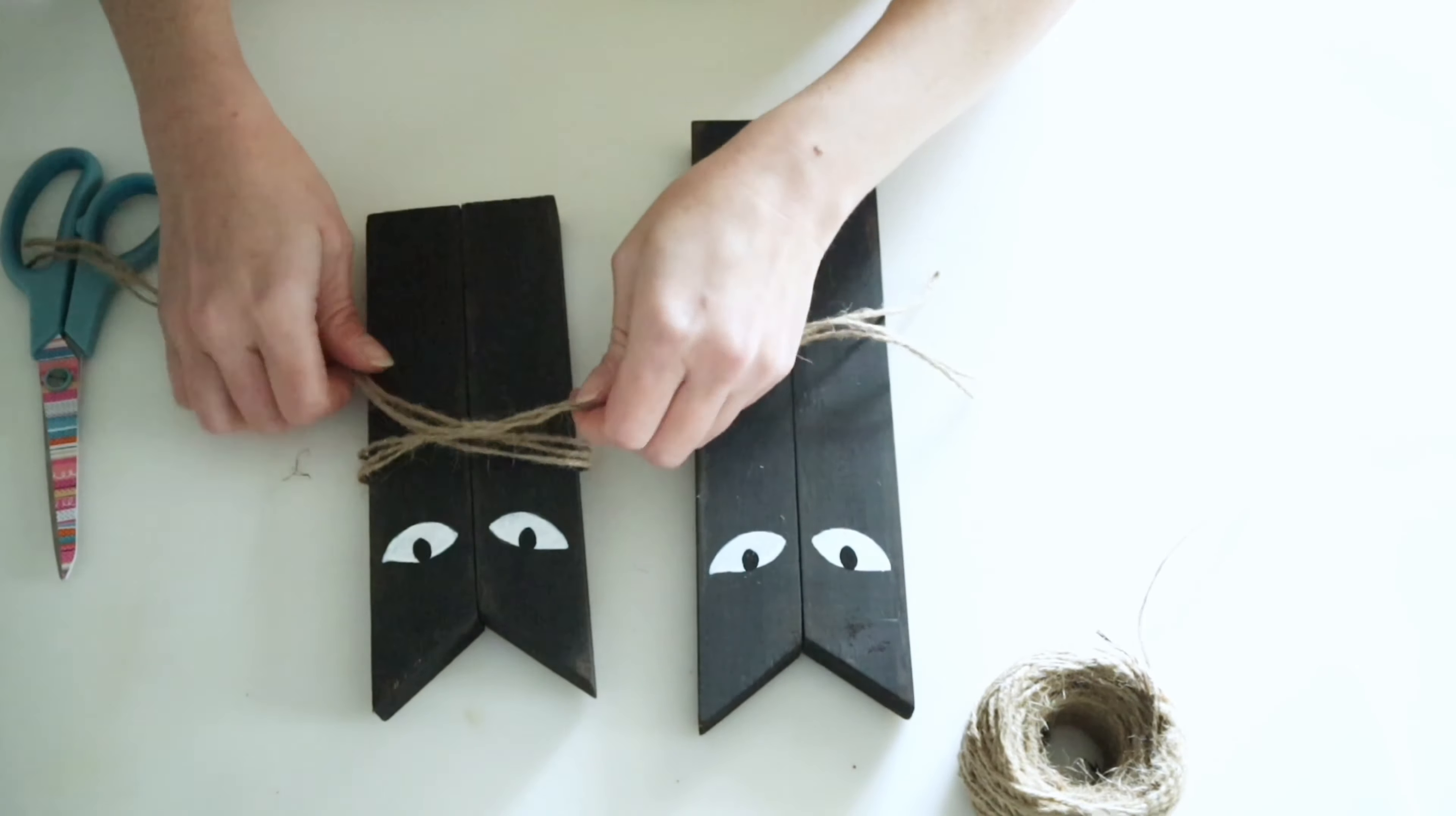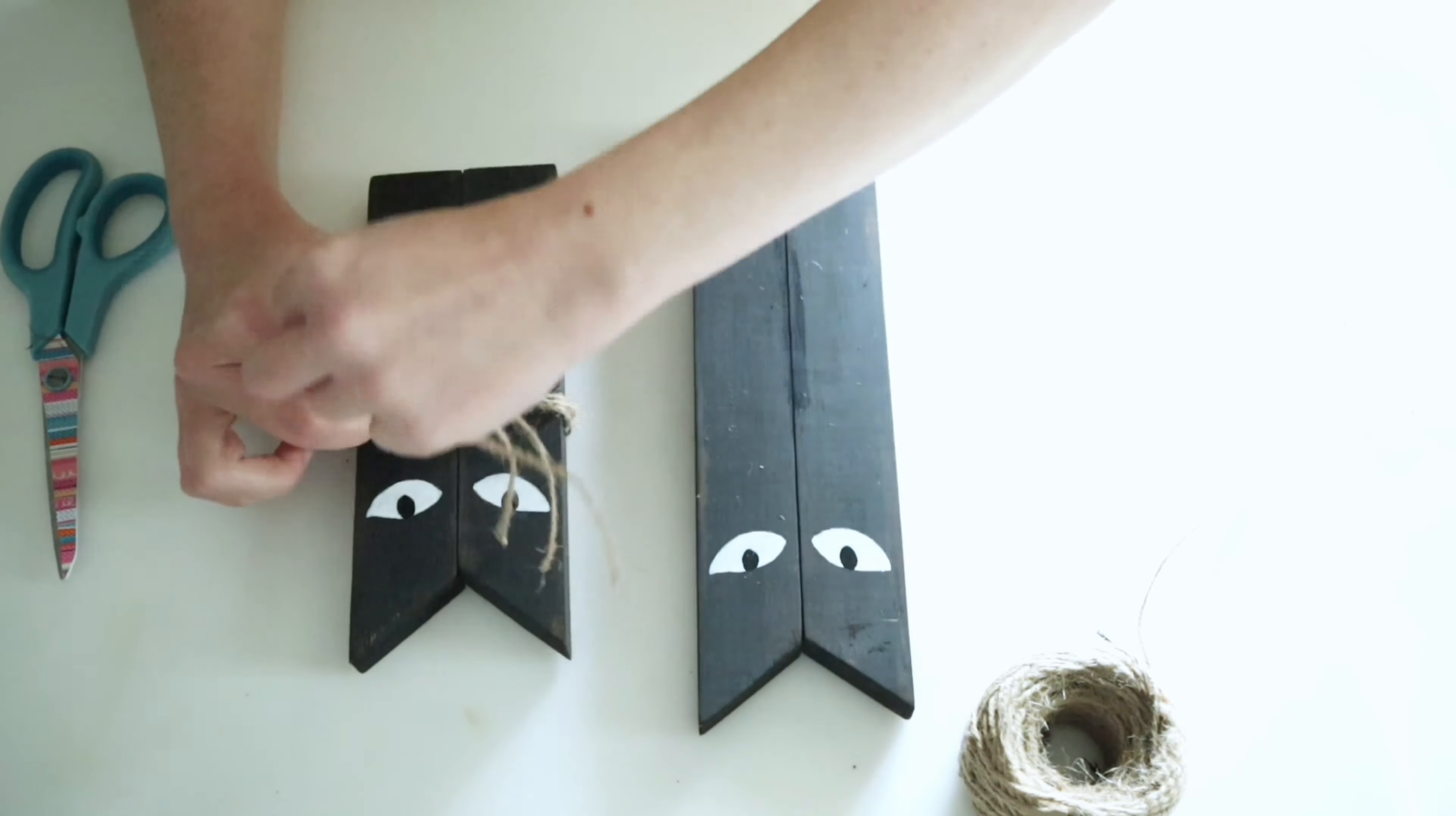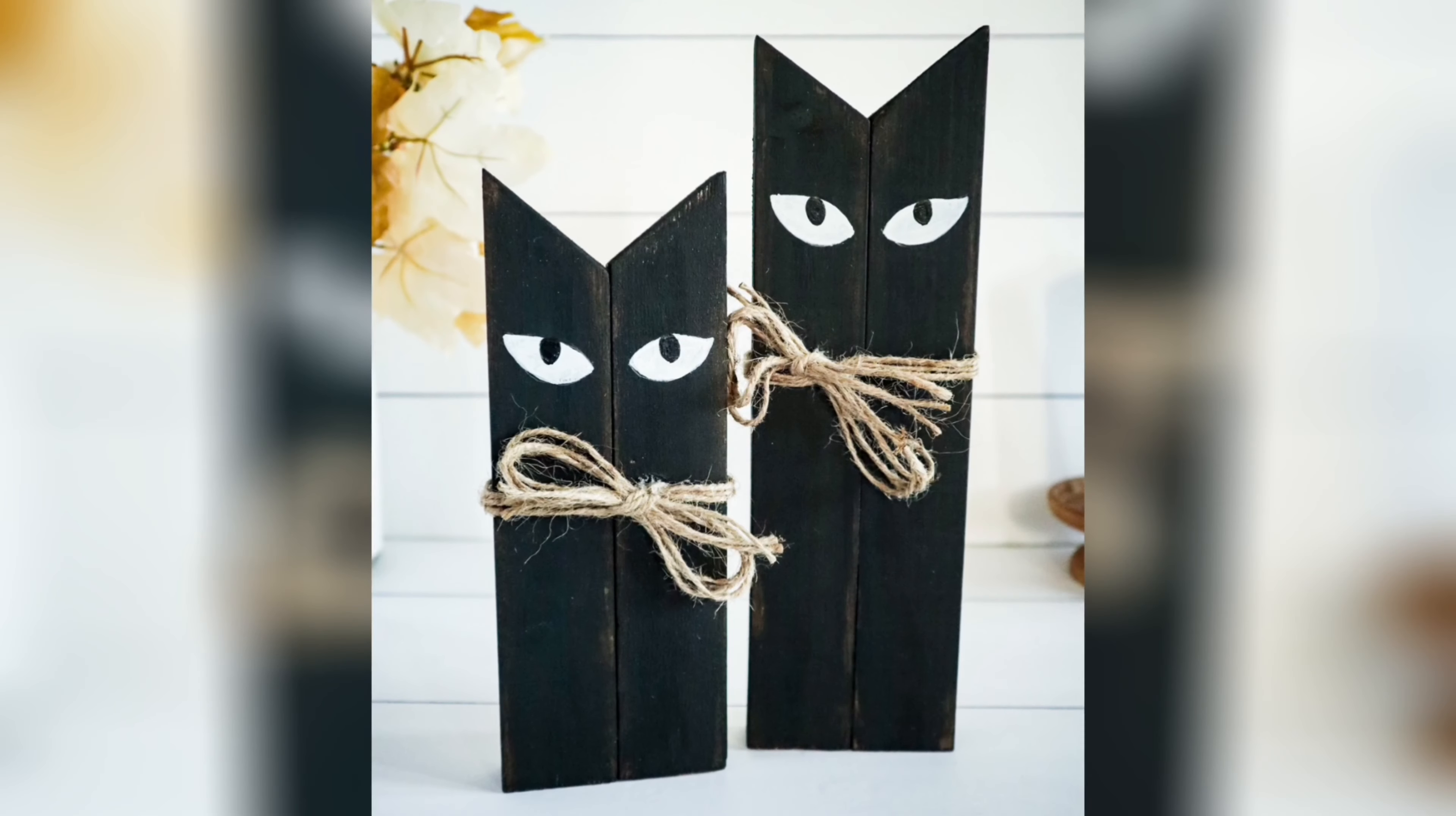And finally for this project, I just took a few pieces of twine and wrapped it around the neck of the cats and just tied little bows. And here's how they turned out.